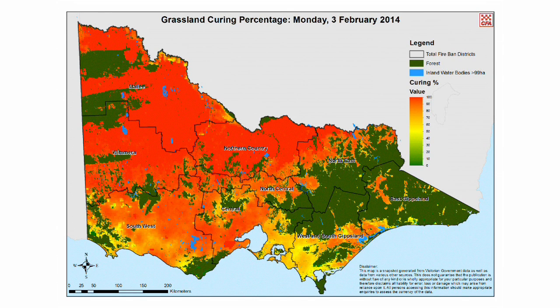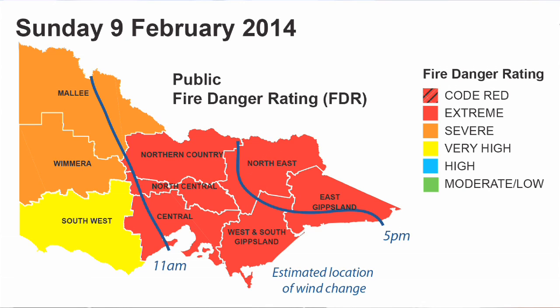It's based on your observations coming in from the field but also satellite data. The grassland curing map is used in a number of different ways and formats for our operations. The forecast fire danger rating map used on the day of the fire was based partially on the curing observations that you sent in, but we also look at forest fuel dryness, relative humidity, temperature and wind speed. Both of these maps were used in preparing for the day that the Mickleham Road fire took off.